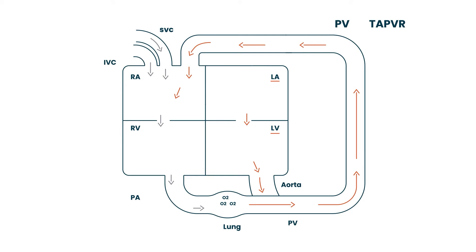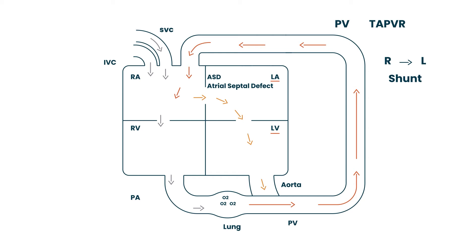Fortunately, what happens in TAPVR is that you have a little opening in between the atria right here. This opening is known as an ASD, also known as an atrial septal defect. It's basically a small opening between the right atrium and left atrium, and what it does is allow blood to go from the right side to the left side — a right-to-left shunt. The right atrium has both deoxygenated and oxygenated blood mixing together, so the end result is not completely oxygenated blood. I'll represent that blood as orange. The orange blood goes into the left atrium, into the left ventricle, and eventually out into the aorta and into the circulation.